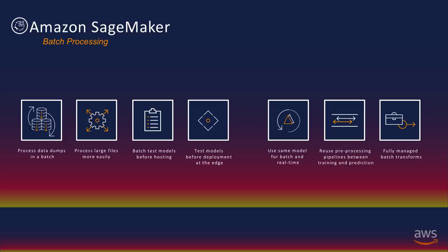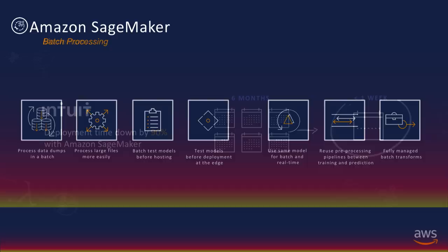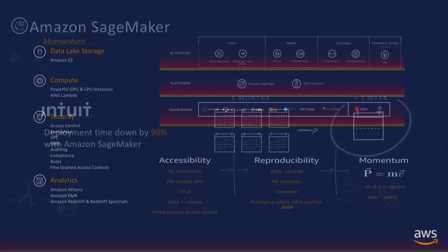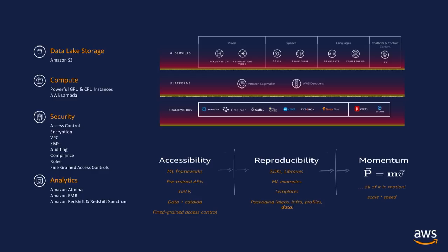All of these together enable what I call momentum. To illustrate with an example: Intuit routinely deploys machine learning models. Traditionally it took them about six months to deploy a model. Now, with all the features for rapid training, rapid deployment, batch transformation, auto-scaling, and all the back-end operations we take care of, they can deploy in one week. The machine learning platform and API services at AWS live within an ecosystem — alongside data lake storage, compute capability, security, compliance, and analytics tools — all plugging in to give you one complete machine learning capability.